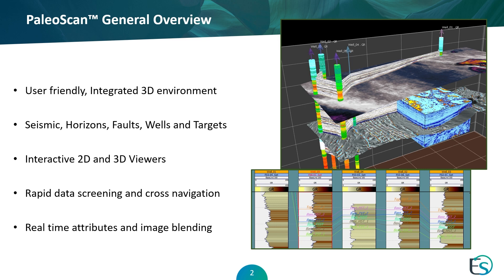PaleoScan is a fully integrated 2D, 3D visualization environment, allowing you to quickly visualize and use all of your geologic data — seismic horizons, faults, wells. We've got some really great tools to allow you to interact between 2D and 3D viewers. We're going to show you in this video all of the ways to manipulate your seismic, your wells, your horizons, by way of displaying real-time attributes using image blending capabilities. And we're going to put it all together in a 3D view that's going to be very stunning and allow you to really focus on your area of interest.